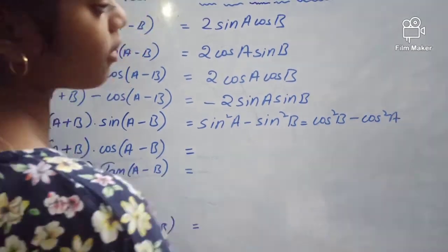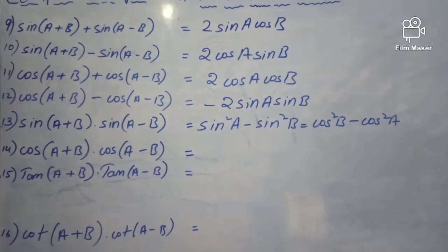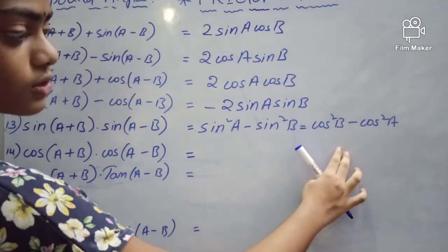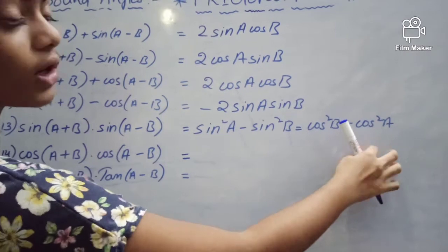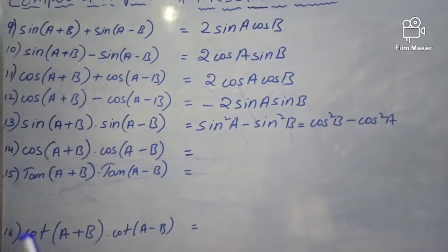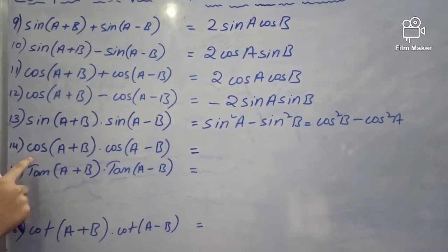How do we get this fundamental formula? The fundamental identity is sin squared A plus cos squared A equals 1.